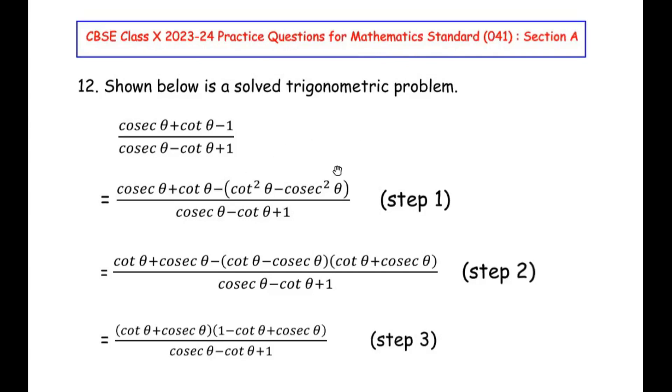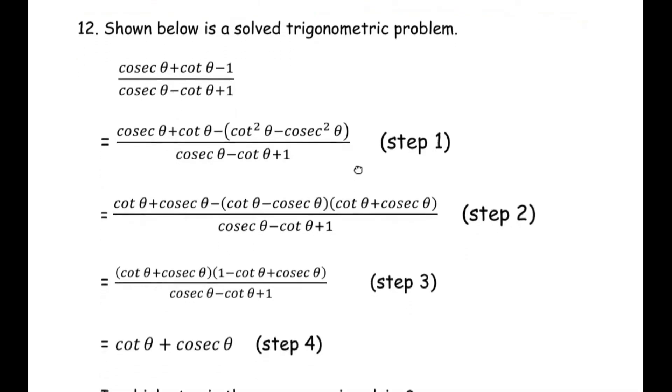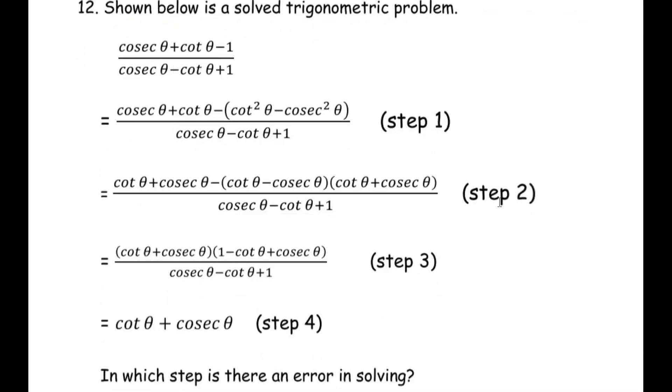Now this question is from the introduction to trigonometry chapter. Shown below is a solved trigonometric problem. So the question is cosec theta plus cot theta minus 1 over cosec theta minus cot theta plus 1. Now you can see that they have already solved the question, that is step 1, step 2, step 3 and step 4.